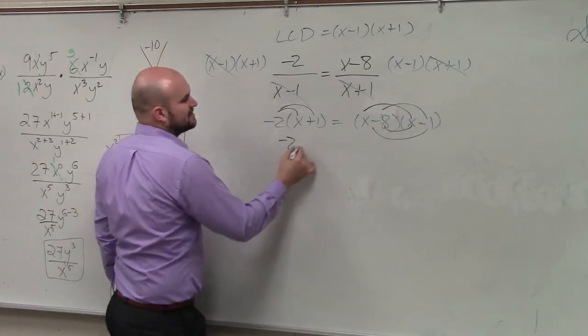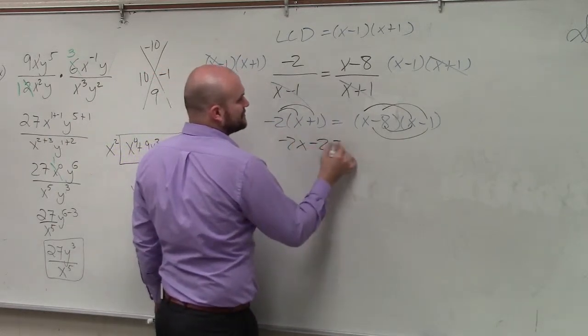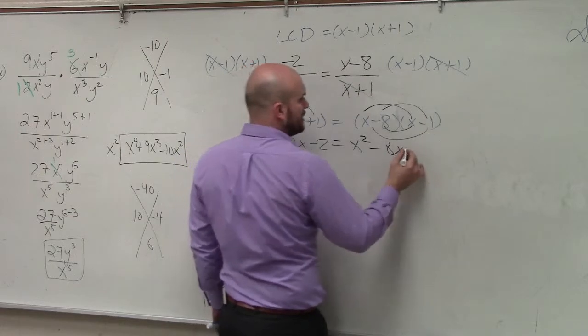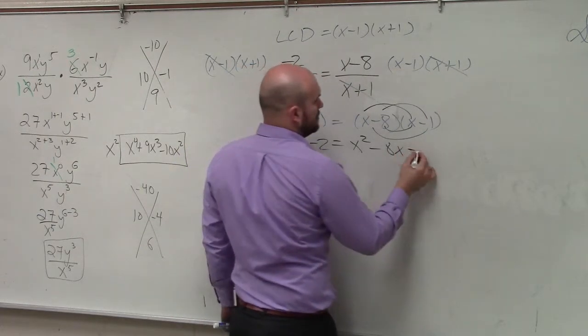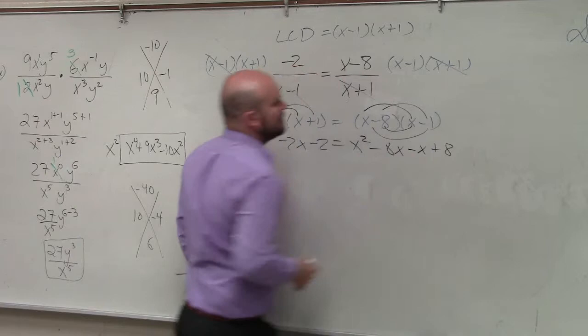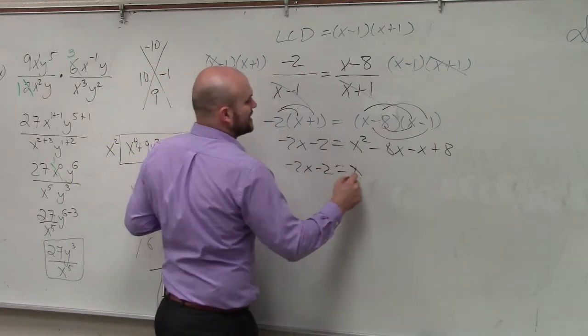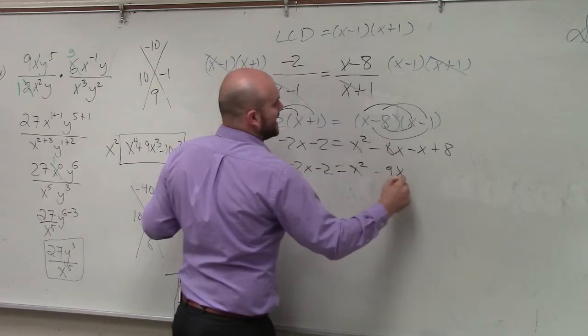So therefore, negative 2 times x is negative 2x, negative 2 times 1 is negative 2. Equals, when I do FOIL, I get x squared minus 8x minus x plus 8. Combine, simplify my terms. Negative 2x minus 2 equals x squared minus 9x plus 8.